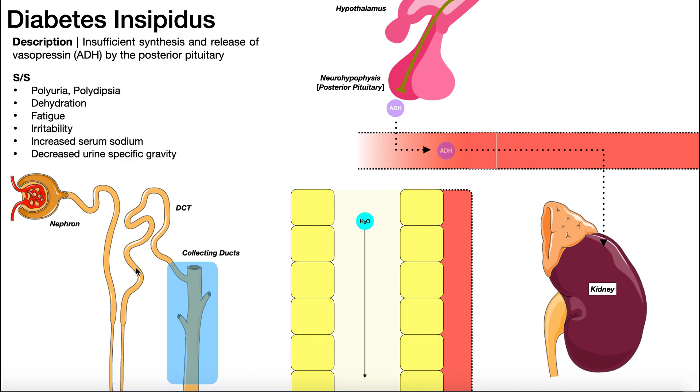Is water going to be able to be reabsorbed very well in the collecting ducts? No. There is water that's absorbed everywhere else here. There is some in the proximal convoluted tubule, some in the distal, there's a ton in the loop of Henle. But the collecting ducts allow a strong regulation on water balance. And so without that ADH here, we're not going to be able to absorb that last bit of water here from the filtrate.